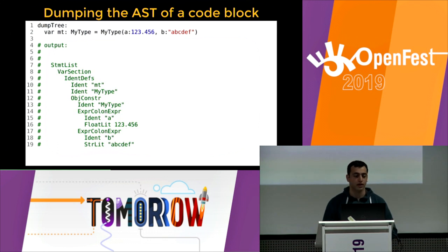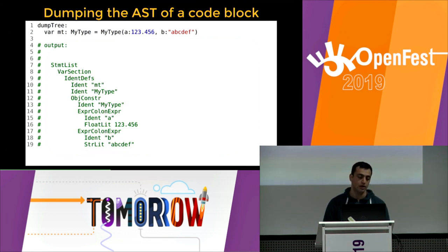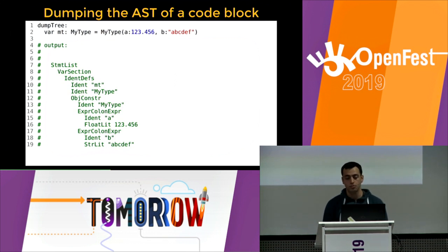We can also call dump-tree on a code block to inspect the AST the compiler sees of our program. For example, a code block making a new variable of some type initialized with a constructor produces output like: a statement list with a var section containing identifiers for the variable name, the type, and an object constructor. This makes it easy to inspect AST structure.